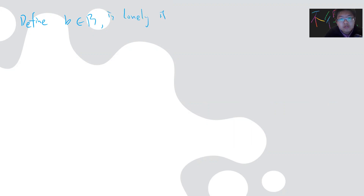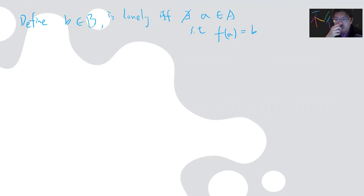There are various proofs online, but I like this very concise one. It's very abstract but interesting. So let's define: b belongs to B is called 'lonely' if there is no a in A such that f(a) = b. So if you take any element in B, it's lonely if it is not the pre-image of some element in A.